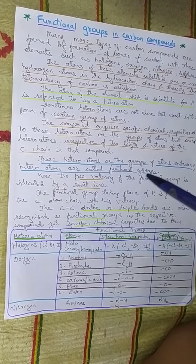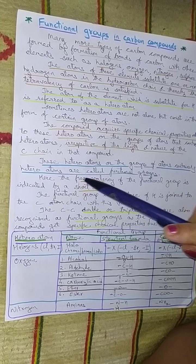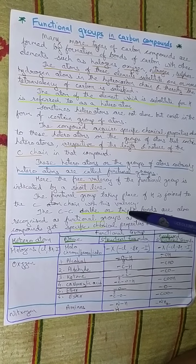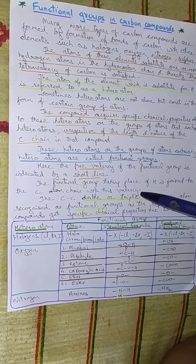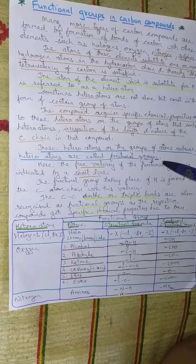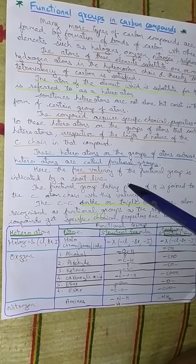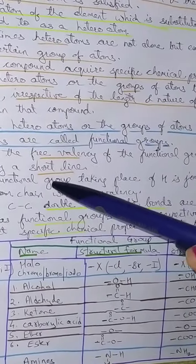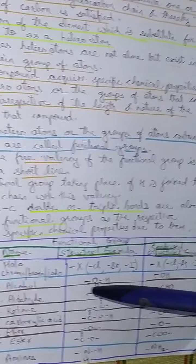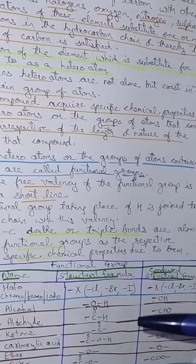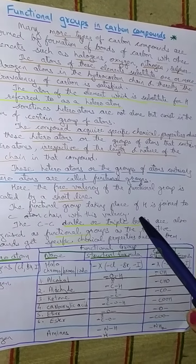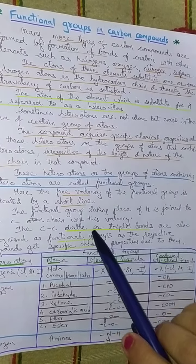These heteroatoms or groups of atoms containing heteroatoms are called functional groups. In simple words, whatever new atom or group is added in place of the replacing hydrogen and joined to the carbon is called a functional group. The free valency of the functional group is indicated by a short line, which shows where another atom can be joined. The functional group takes the place of hydrogen and is joined to the carbon atom through this valency.